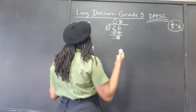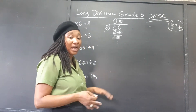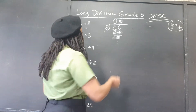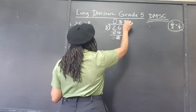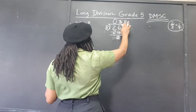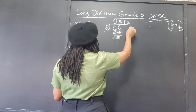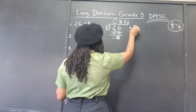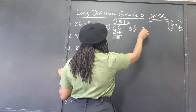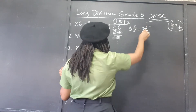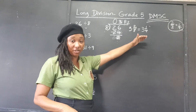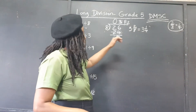We can write this answer a number of ways: we can write it as a decimal, as a fraction, or we can just put R2 — 3 remainder 2. We can write it as 3 and 2 over 8, which simplifies to 3 and a quarter.